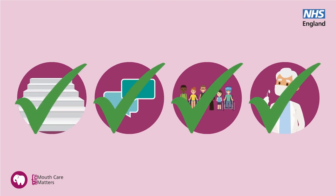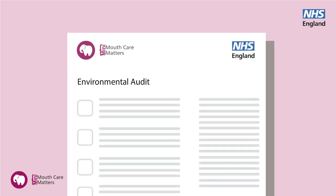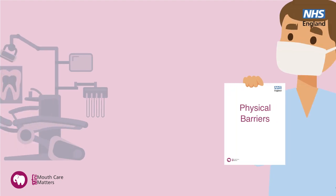It is necessary to make a reasonable adjustment for all patients who are at a disadvantage because of their special educational needs or disability. You may need to carry out an environmental audit to establish how your practice can be adapted. Here are some examples of reasonable adjustments which can be made.